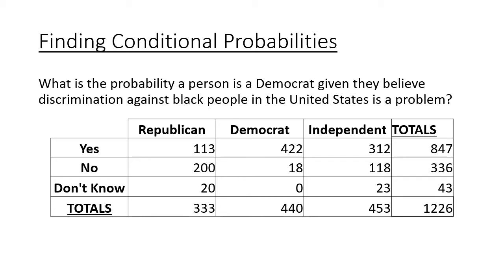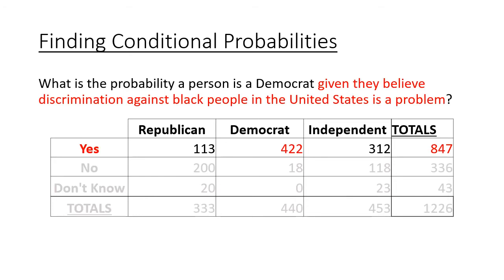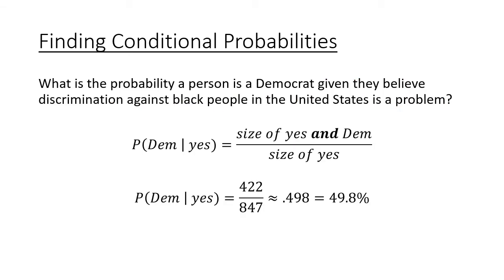Now let's look at conditional probabilities. What is the probability a person is a Democrat, given that they believe discrimination against black people in the United States is a problem? The key is to identify what is given. Given that they answered yes, I can ignore the rest of the table — my sample is restricted to just the 847 people who said yes. Of those, the entry for people who said yes and are Democrat is 422.